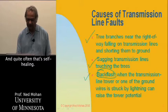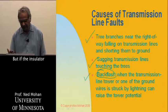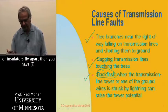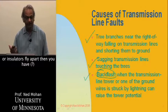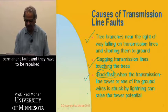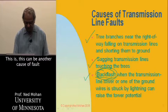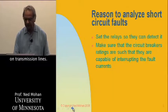Quite often, that's self-healing. But if the insulator or insulators fly apart, then you have a sort of permanent fault and they have to be repaired. So this can be another cause of fault on transmission lines.